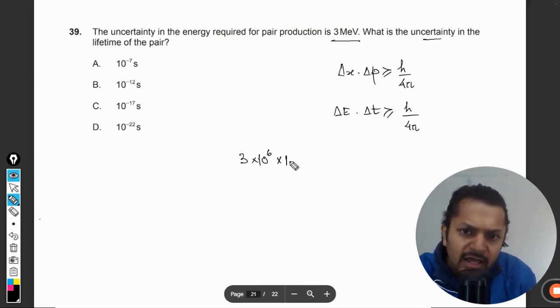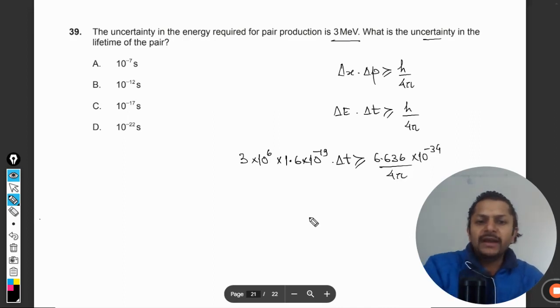3 × 10^6 electron volts can be converted into joules by using 1.6 × 10^-19 times ΔE, and this is coming out to be 6.636 × 10^-34 divided by 4π.